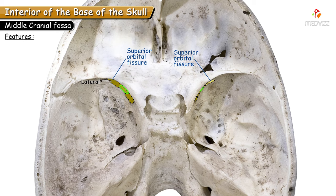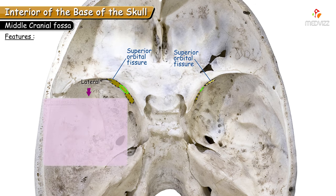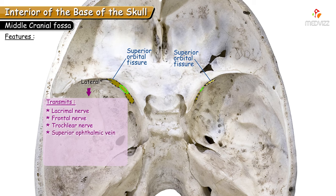The lateral part of the superior orbital fissure transmits the lacrimal nerve, frontal nerve, trochlear nerve, superior ophthalmic vein, meningeal branch of the lacrimal artery, and the orbital branch of the middle meningeal artery.